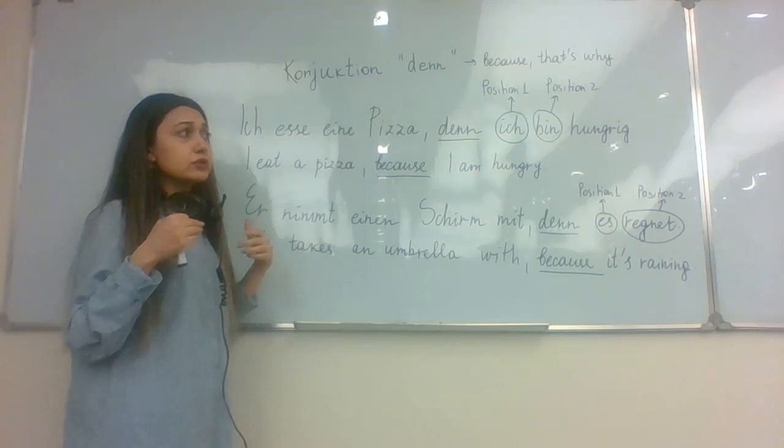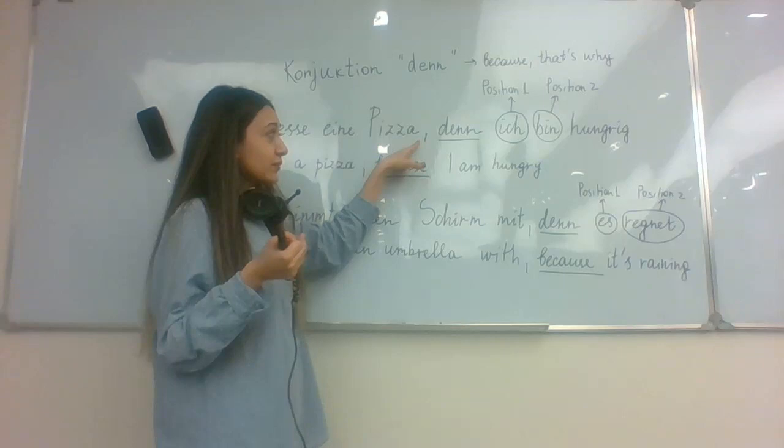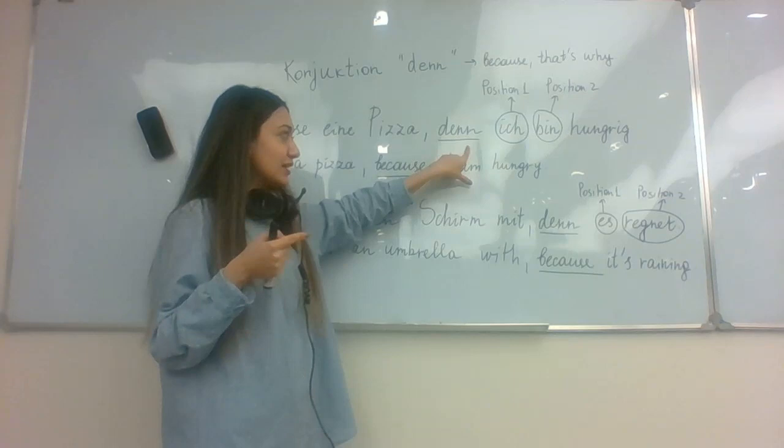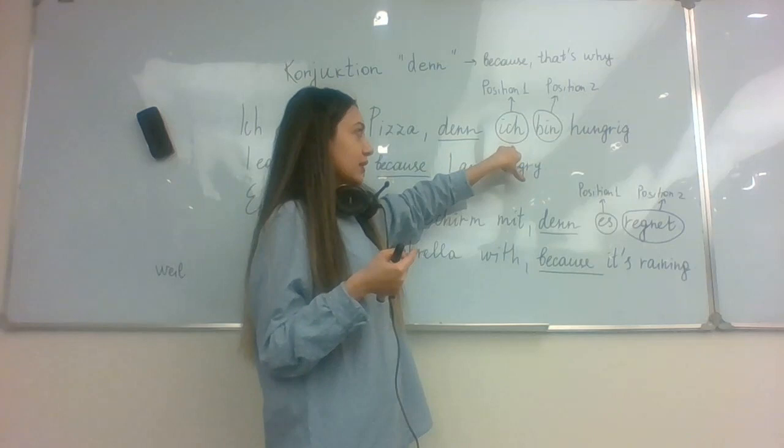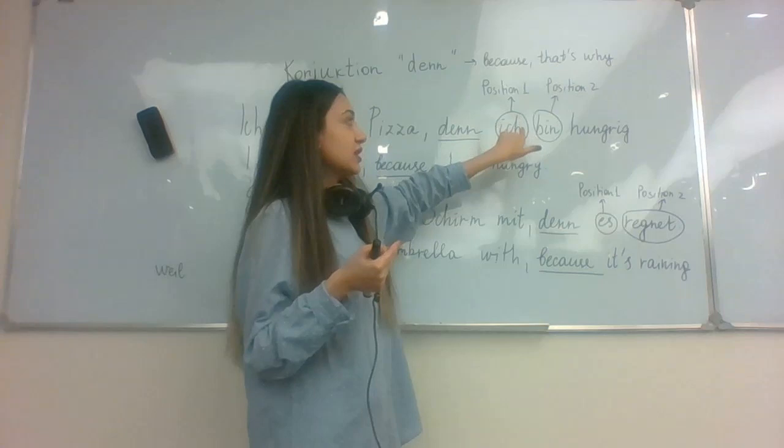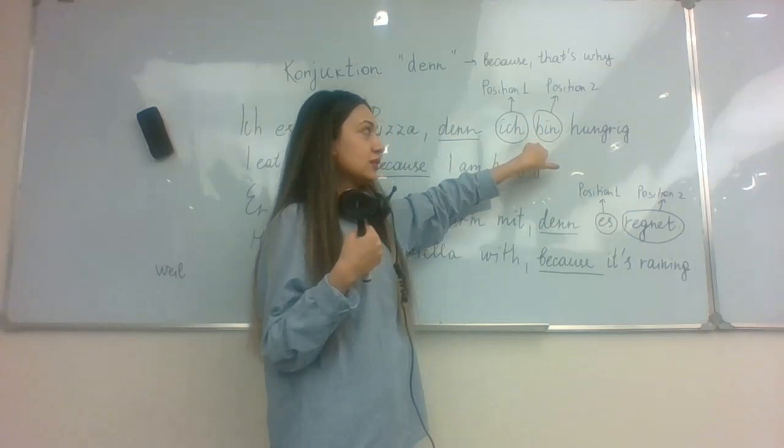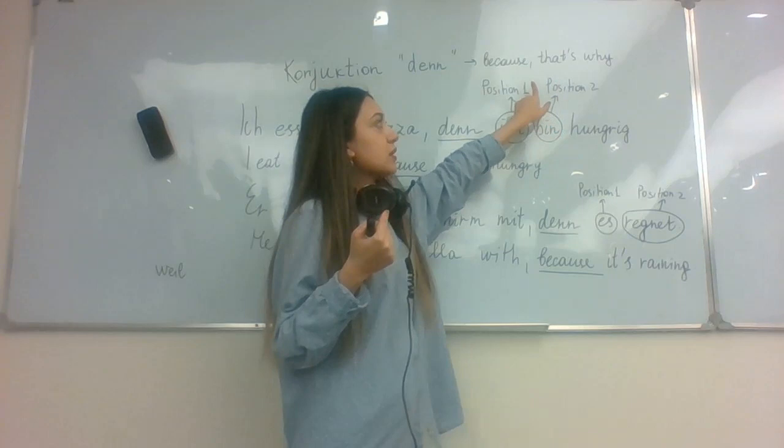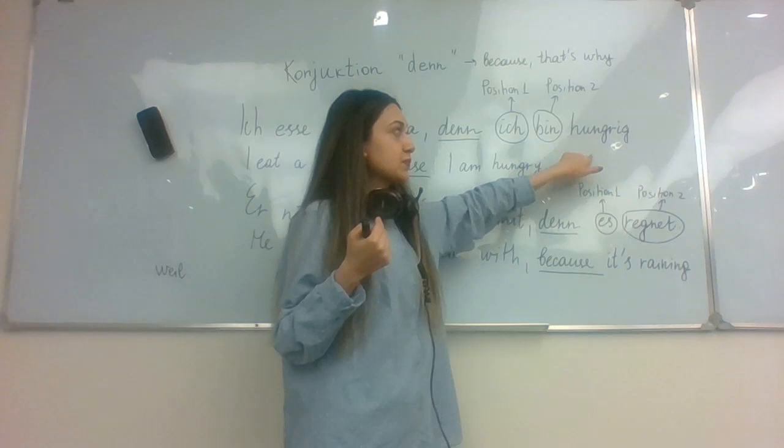So conjunction denn here in German comes always after comma. We have here our first sentence. It's a normal sentence, which gives us information. Ich esse eine Pizza. It means I eat pizza. We have this information. But now, we have to know the reason. We write the comma and after comma write denn. First denn, which means because or that's why. And then, here on the first position after denn, we have ich, which means personal pronoun. I, bin, means am, the verb. Always and always on the second position, after personal pronoun.